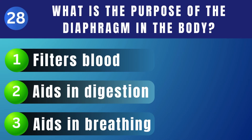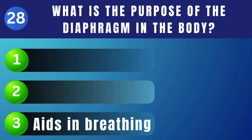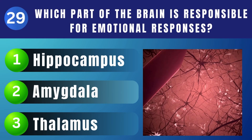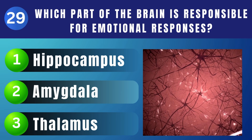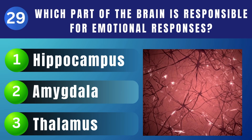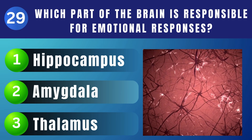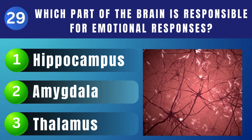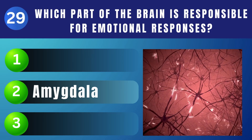What is the purpose of the diaphragm in the body? Aids in breathing. Which part of the brain is responsible for emotional responses? Amygdala.